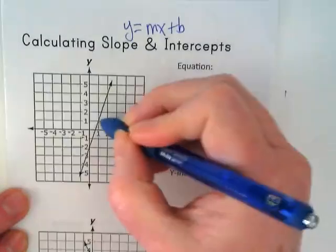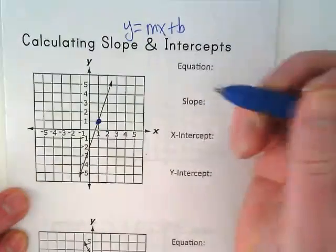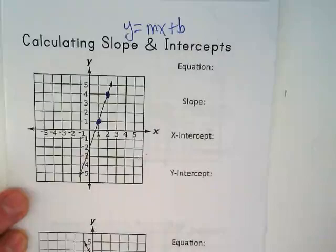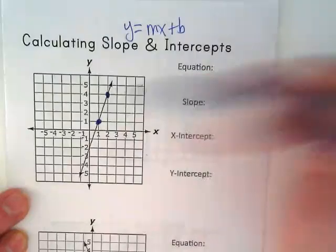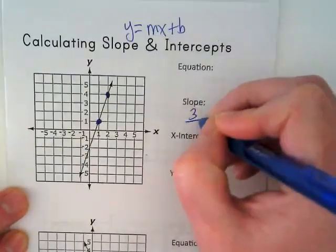That means finding two points on the line where they cross exactly and calculating the rise over run. And it looks to me like the slope is three over one.